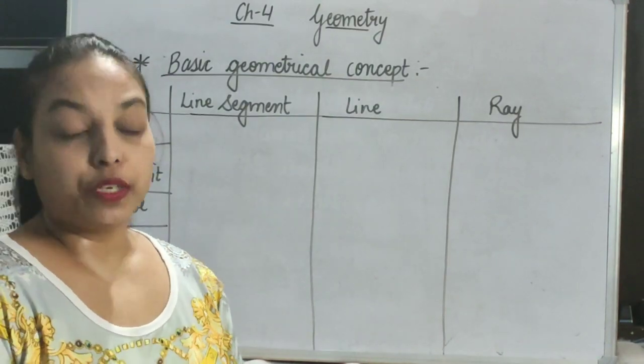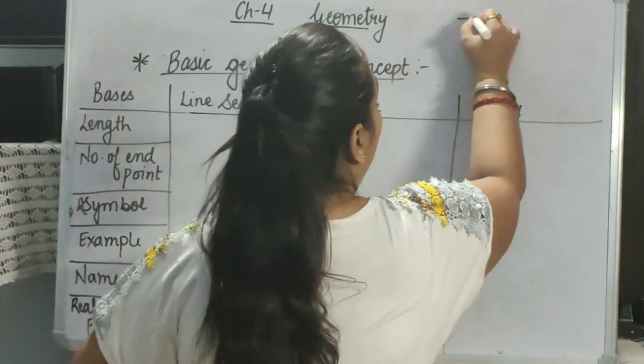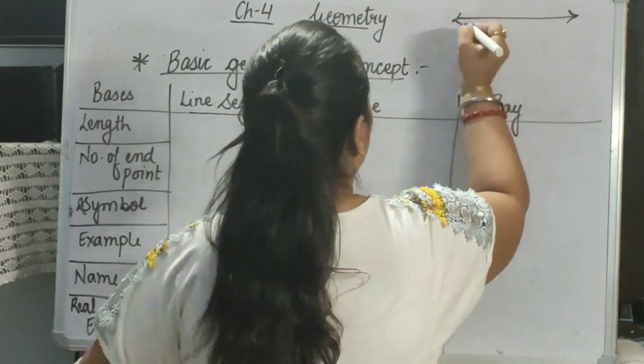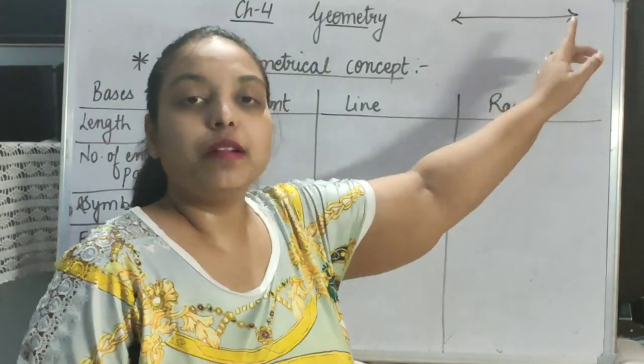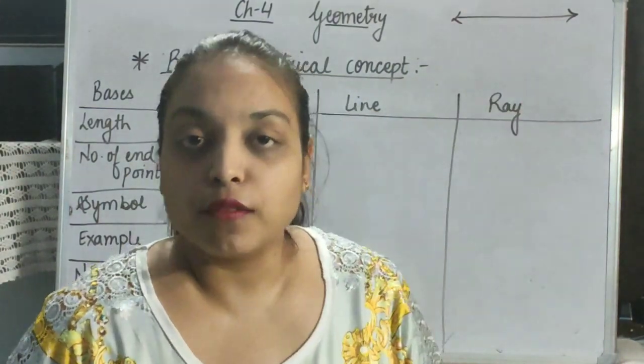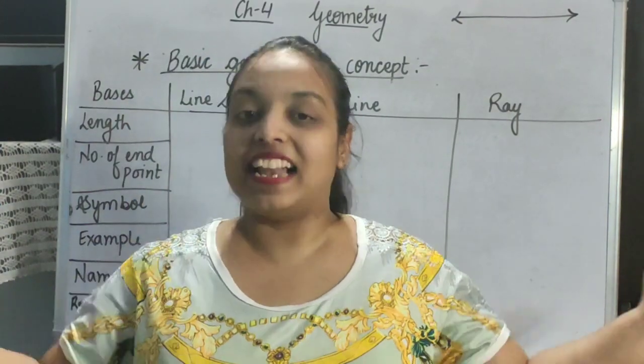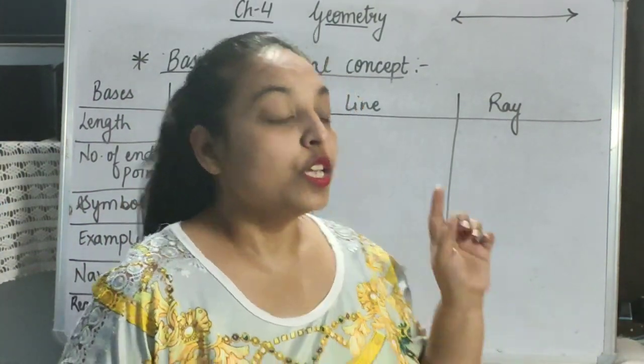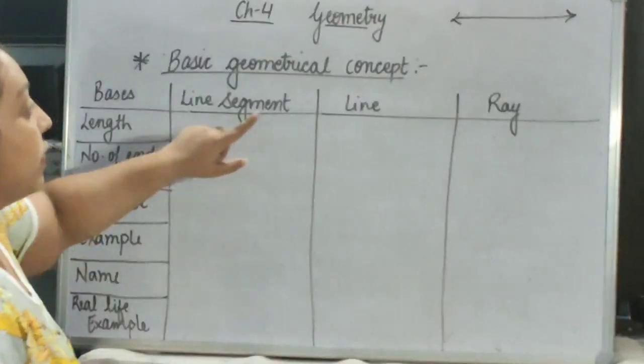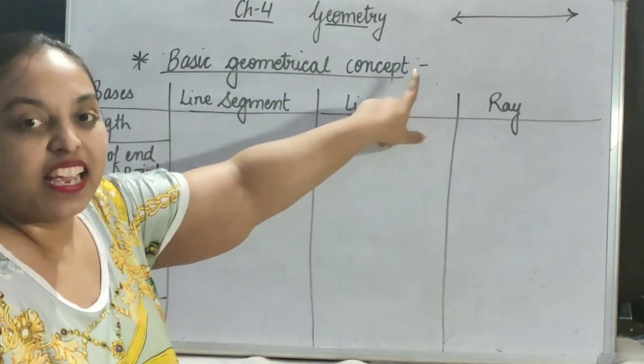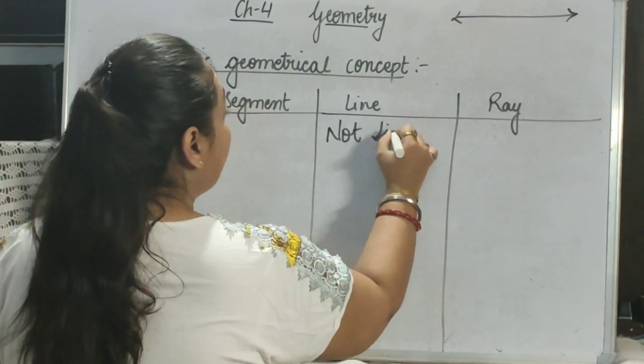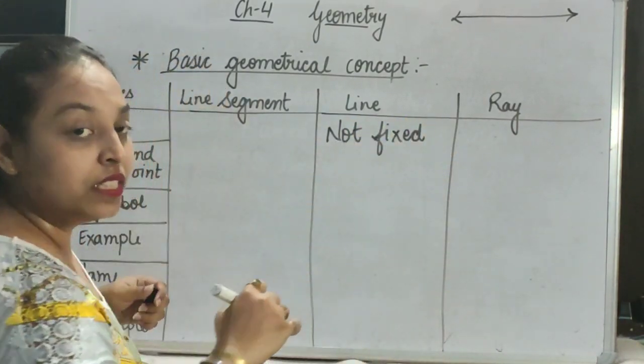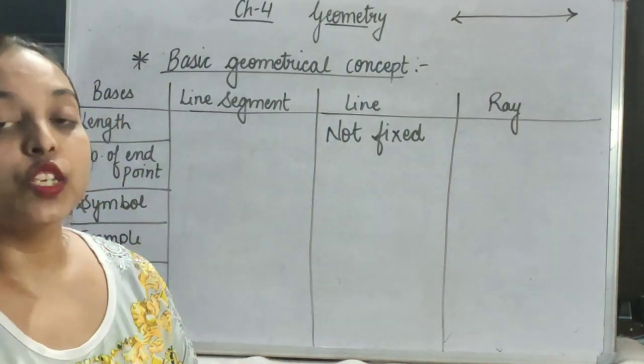Now we are going to start with line. Now I am drawing a line here. Now, what can we observe in it? We can observe, I have drawn two arrows at the both ends. It means, the both ends of the lines are moving endlessly, continuing endlessly. So, it means, the length of this line is not fixed. Why not fixed? Because, it is moving in both the directions endlessly. There is no end.